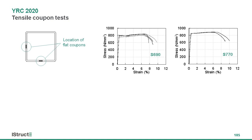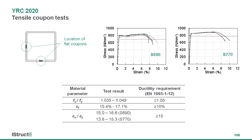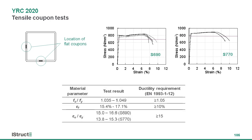For tensile coupon tests, the specimens were extracted from the flat faces of the section. On the right are some typical stress-strain curves obtained from the tensile coupon tests. Compared with normal strength steel, the lower ductility and less strain hardening are clear when plotted together. A quick assessment of the ductility against the Eurocode 3 criterion shows the tested materials failed to meet some of the criteria, which is something to be aware of when using high-strength steel in design, particularly when plastic design is involved.